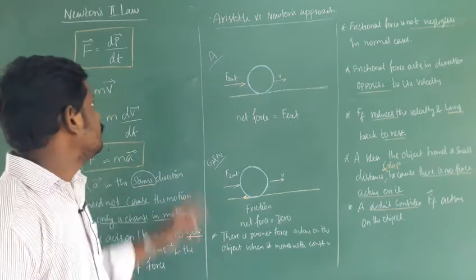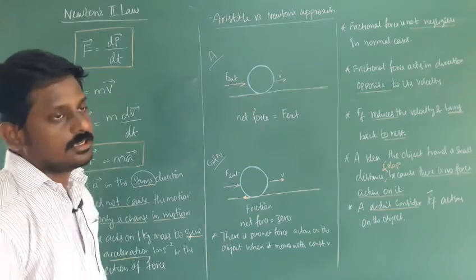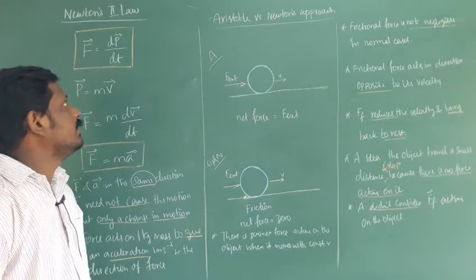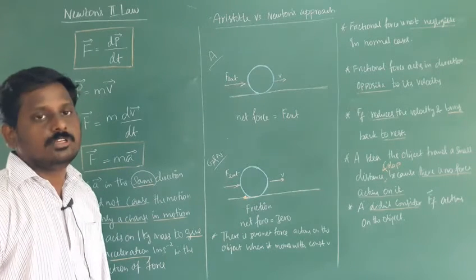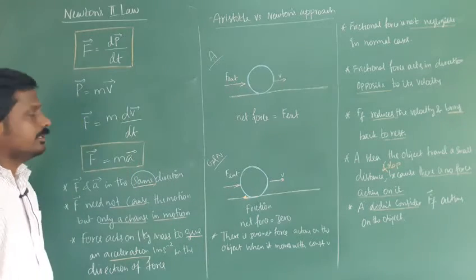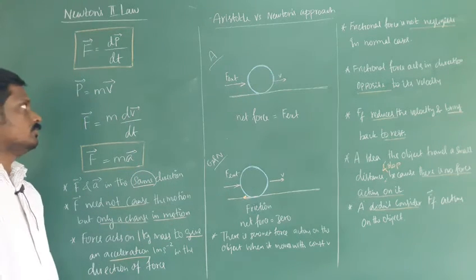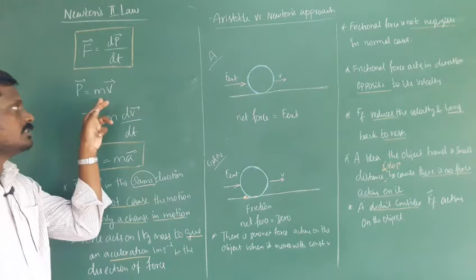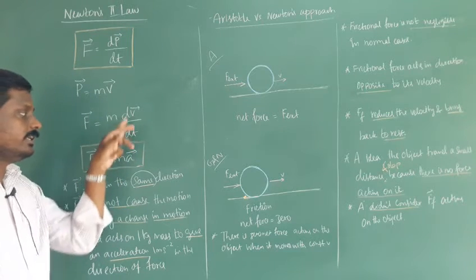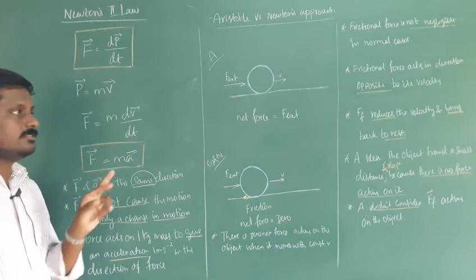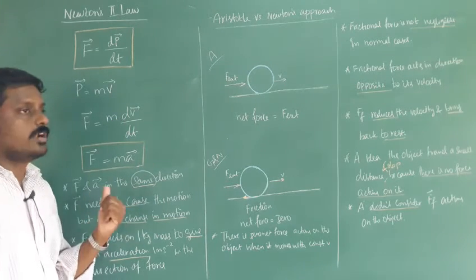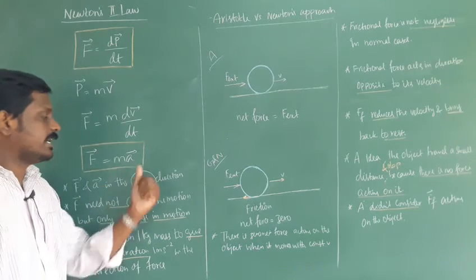Newton's second law states that the force acting on an object is equal to the rate of change of momentum, that is dp/dt. Here p is linear momentum, which is the product of mass and velocity. Substituting, with mass constant, we get mass times dv/dt, and since dv/dt is acceleration — change in velocity with respect to time — force equals mass times acceleration.